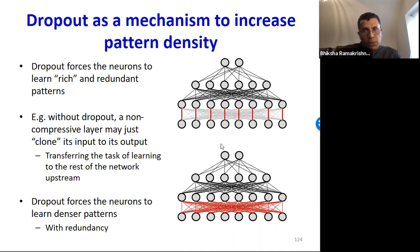By randomly switching off neurons, dropout ensures that neurons don't learn such simple trivial relationships, but actually learn to recognize denser, more informative patterns.